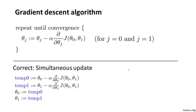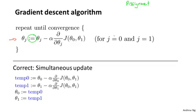Let's look at the math. This is the definition of the gradient descent algorithm. We're going to repeatedly do this until convergence: update parameter θj by taking θj and subtracting from it alpha times a derivative term. First, the notation — colon-equals denotes assignment, the assignment operator. So if I write a := b, this means take the value in b and use it to overwrite the value of a — set a to be equal to the value of b.